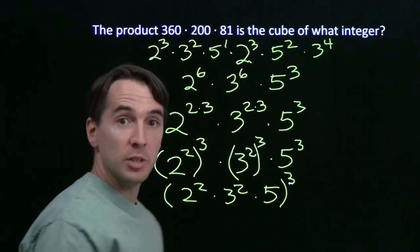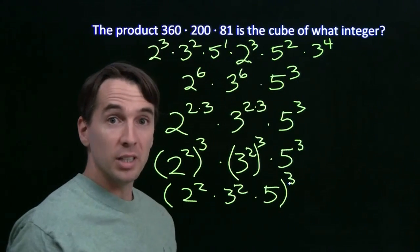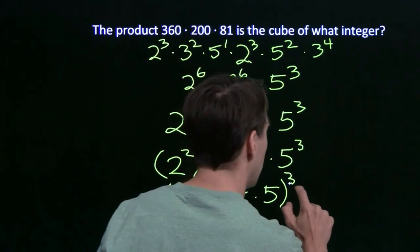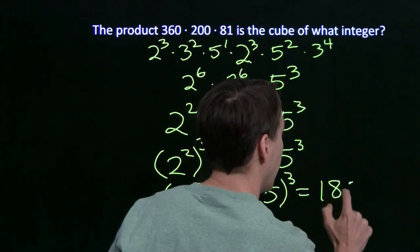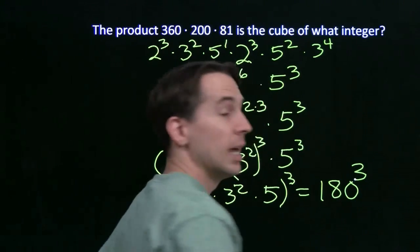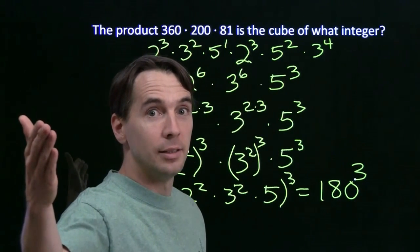2 squared is 4, 4 times 5, that's 20. 3 squared is 9, 9 times 20. That's 180, and we are done. We are done.